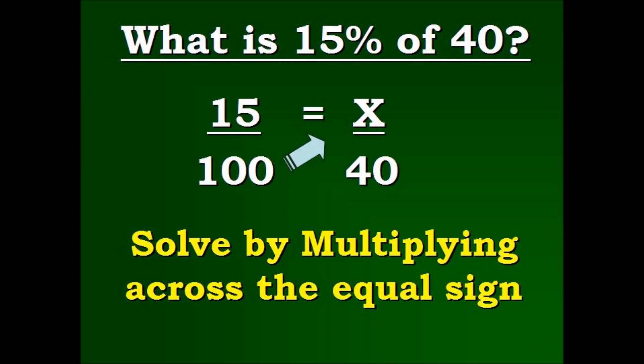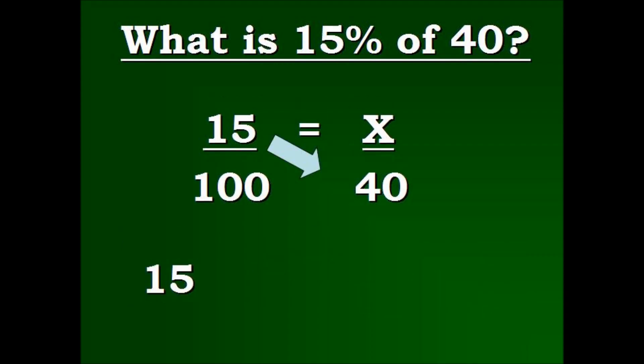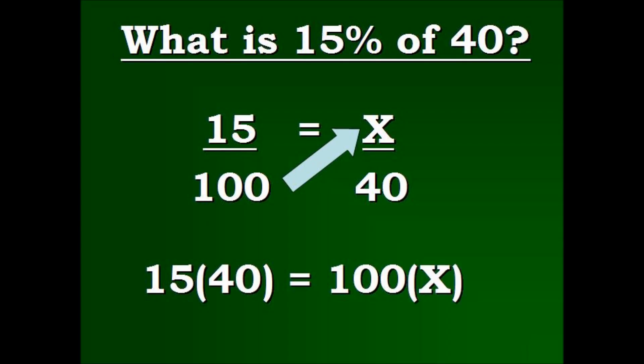And you can see we're going to start from one hundred and we're going to multiply the x. Then we're going to come back and we're going to multiply the forty and fifteen. Here's how it looks: Fifteen times forty. We're going to insert our equal sign. One hundred times x. See how that's different?